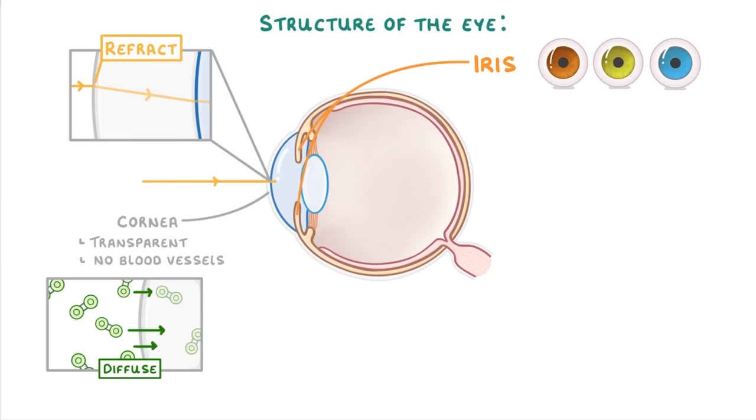The pupil itself is just here, and it's not actually a structure. It's just this gap in the middle of the iris that allows the light to pass through to the lens.